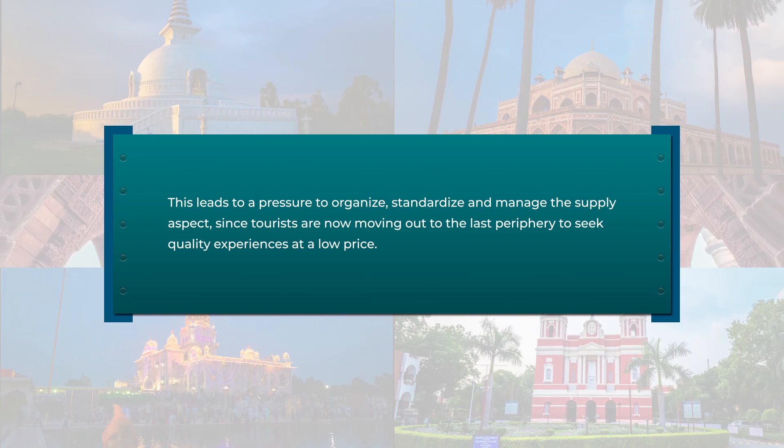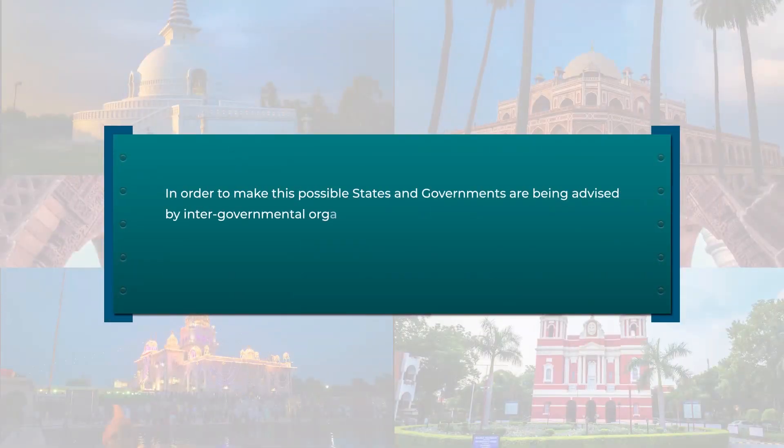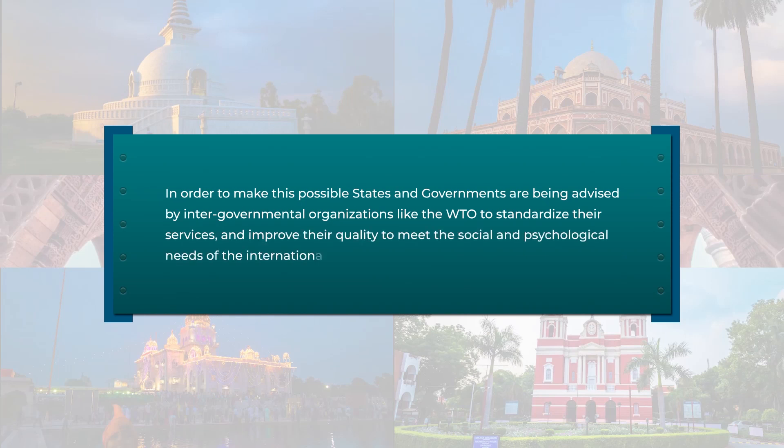This leads to pressure on third-world destinations to organize, standardize, and manage the supply aspect, since tourists are moving to see quality experiences at lower prices. There is a lot of competition between countries in Asia trying to attract people from Western Europe and the Americas. That is why states and governments are being advised by intergovernmental organizations like the UNWTO to standardize their services and improve their quality to meet the social and psychological needs of international tourists.